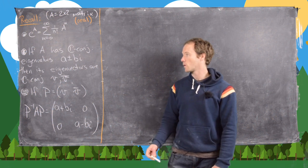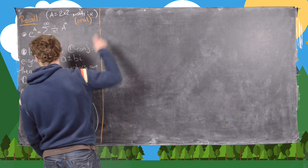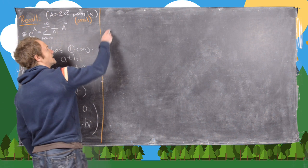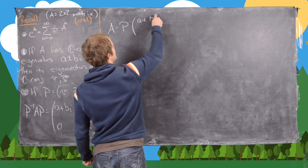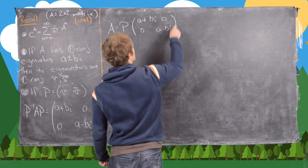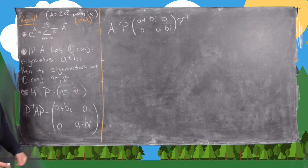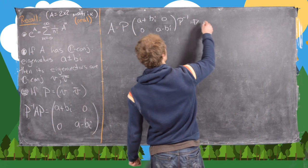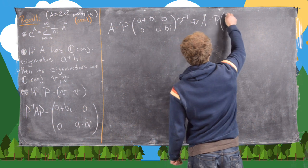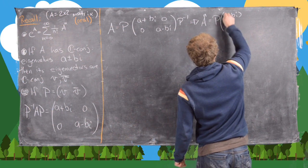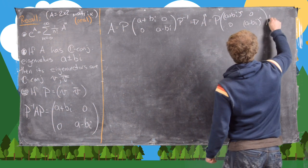Moving towards finding the matrix exponential: we can write A equals P times the diagonal matrix with A plus Bi and A minus Bi, times P inverse. Notice that this very cleanly gives us A to the N equals P times the diagonal matrix with entries (A plus Bi) to the N and (A minus Bi) to the N, times P inverse.